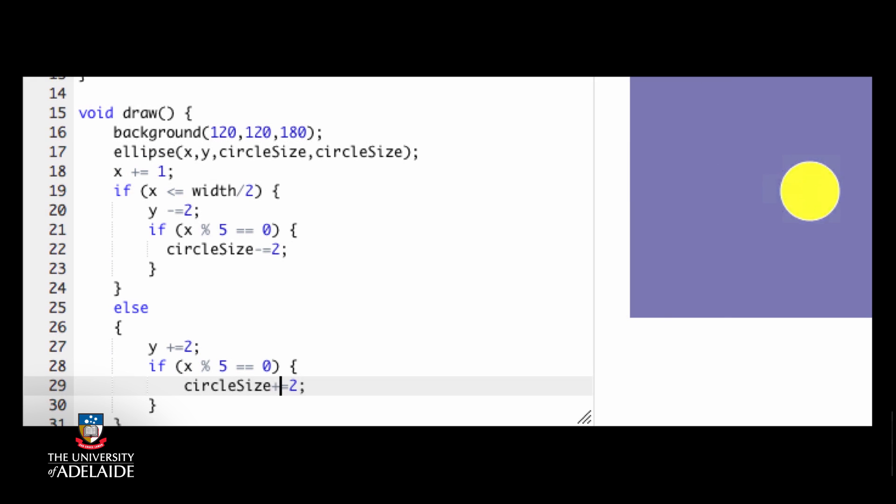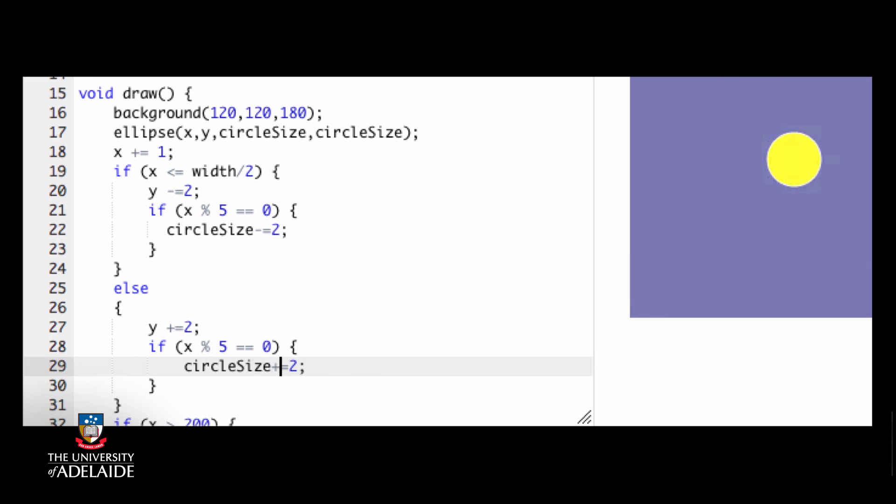How about we only change it every fifth time x changes? With some trial and error to see what looks good, each time the sun changes size, it does so by 2 pixels and it will change every time that x can be divided by 5, leaving nothing over. Remember that from checking for even numbers?